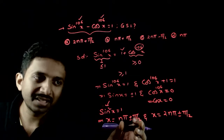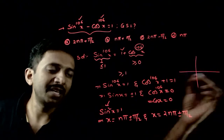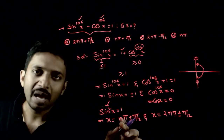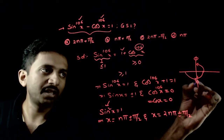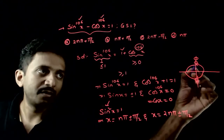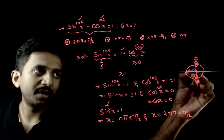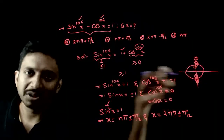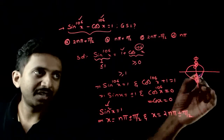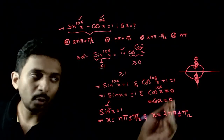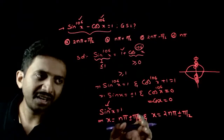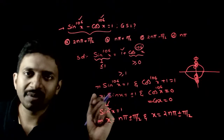Let us see what solutions these give. For nπ ± π/2: putting n=0 gives ±π/2; putting n=1 gives π ± π/2, and so on — cycling through positions. For 2nπ ± π/2: putting n=0 gives ±π/2; putting n=1 gives 2π ± π/2, and so on. So effectively, nπ ± π/2 and 2nπ ± π/2 give exactly the same set of positions — these two answers are the same.